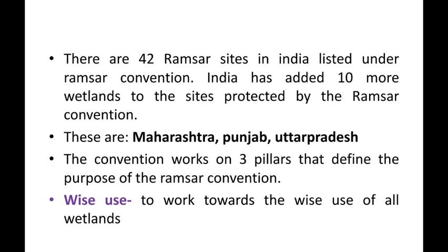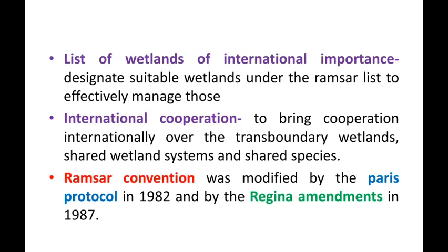The convention works on three pillars that define its purpose. The first pillar is wise use — to work towards the wise use of all wetlands, meaning proper management to avoid degradation. The second pillar is the list of wetlands of international importance — to designate suitable wetlands under the Ramsar list and effectively manage those 2,422 wetlands to prevent damage and deterioration.